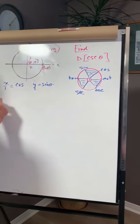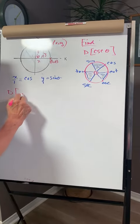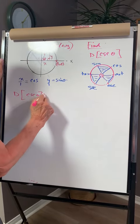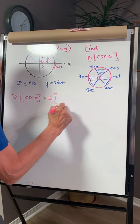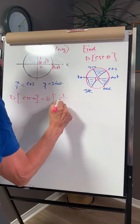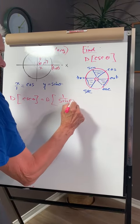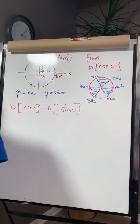The derivative of cosecant of the function is the same as taking the derivative of 1 over the sine of the function. We're going to use the quotient rule.